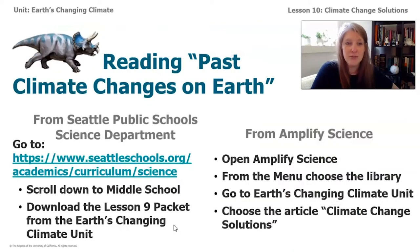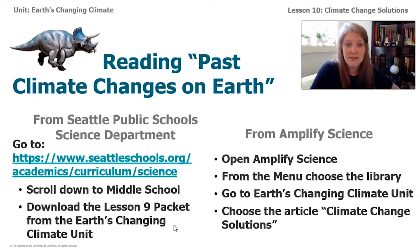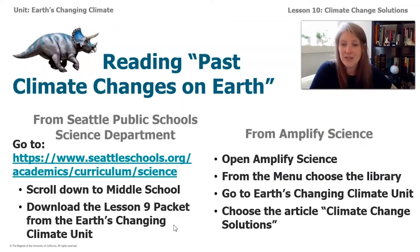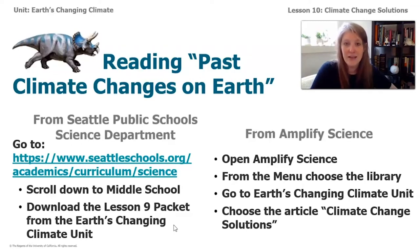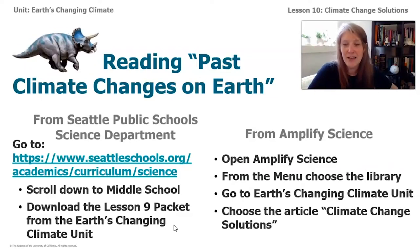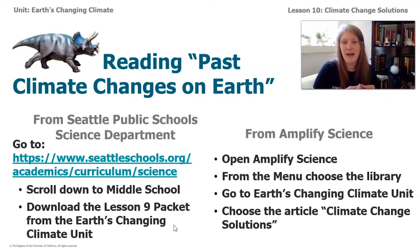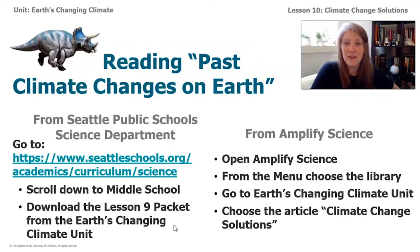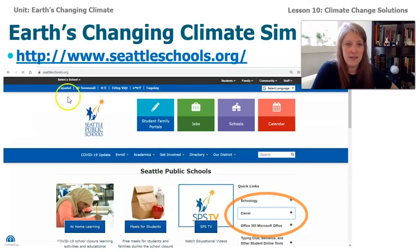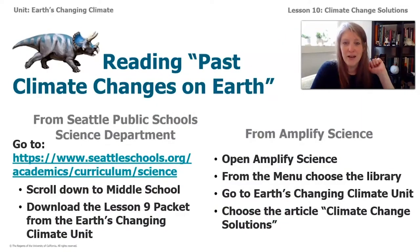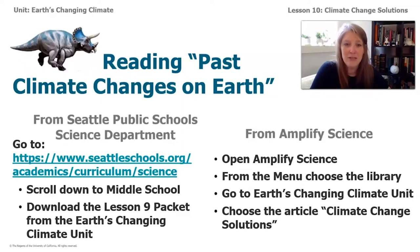To get a copy of the article, you can go to the Seattle Schools Science Department website at seattleschools.org/academics/curriculum/science. Scroll all the way down to middle school, sixth grade, and find lesson nine of the Earth's Changing Climate unit — the article is in that packet. You can also go on to your Amplify account by going to seattleschools.org, clicking on Clever, choosing the Amplify app, opening your account, then opening the menu and going to the library, where you will see the article.